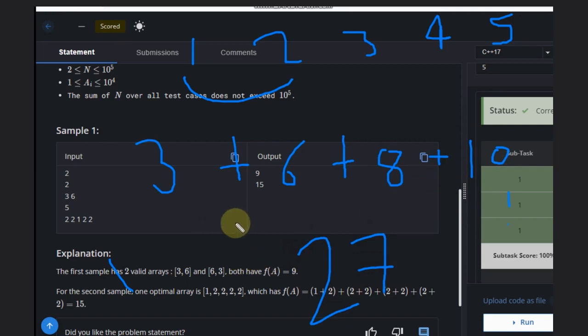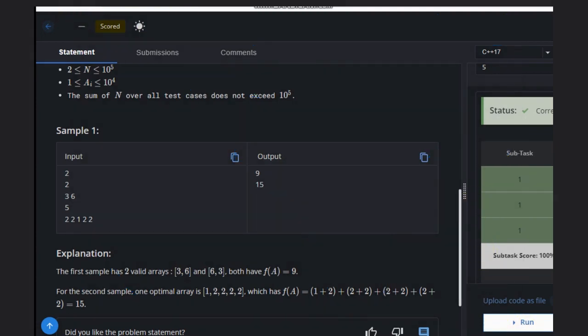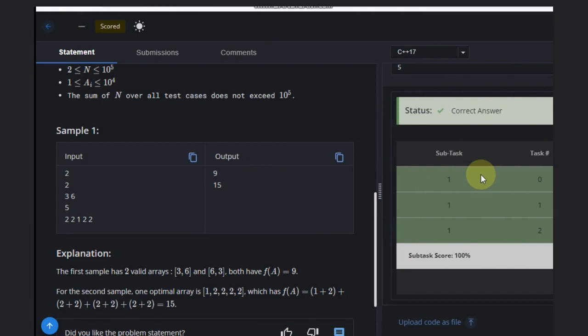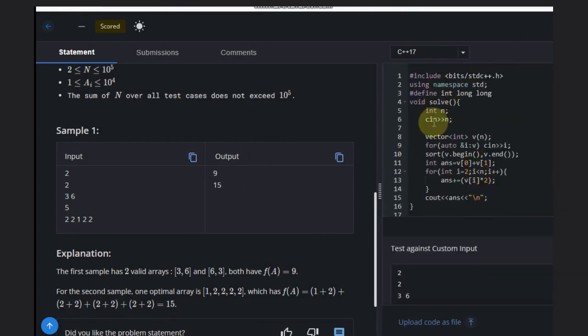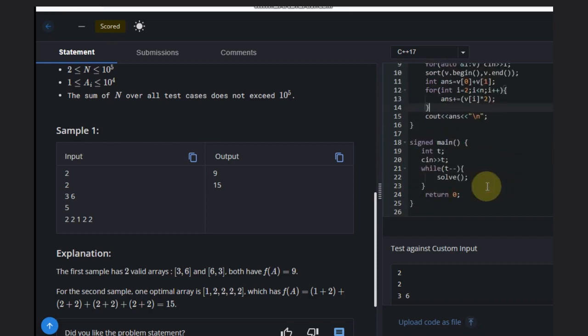That is our answer. You need to think in this fashion to solve this question. Hope you understood the solution, so let's see the code. We just need to take the input, declare the vector, sort the vector, take the sum of first two elements, then add twice of each remaining element. That's it, you will get your answer. Hope you understood the solution. Like this video, subscribe the channel, thank you and keep coding.